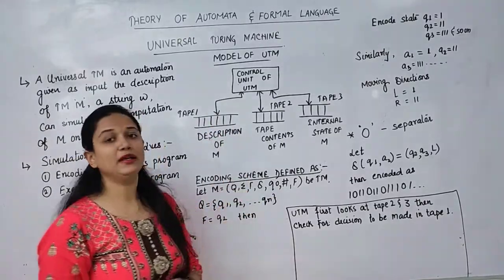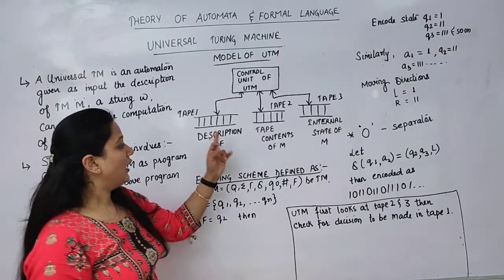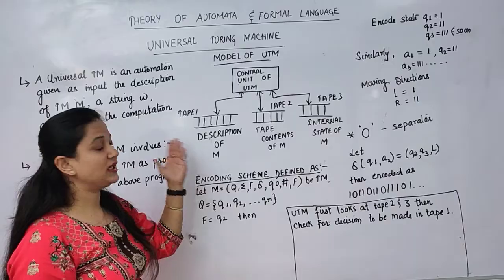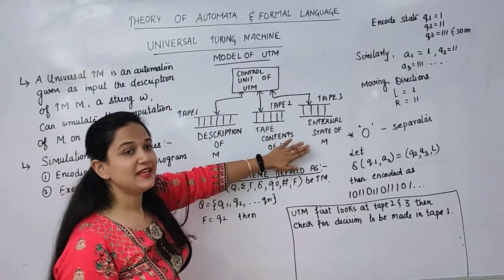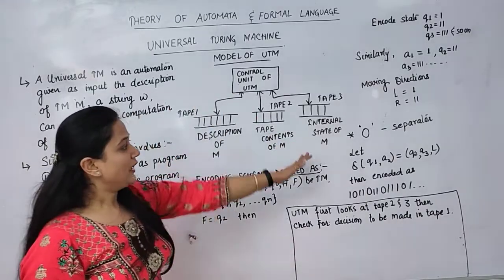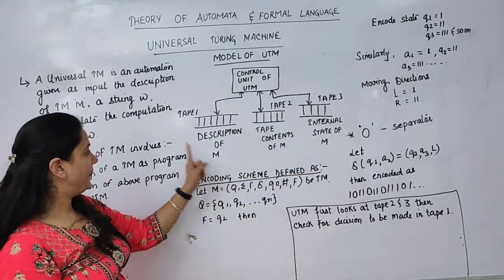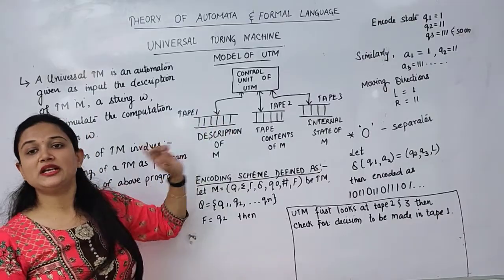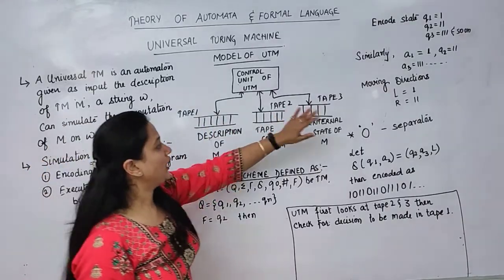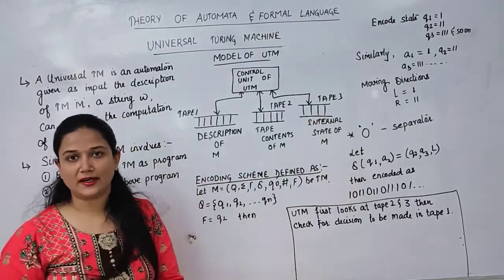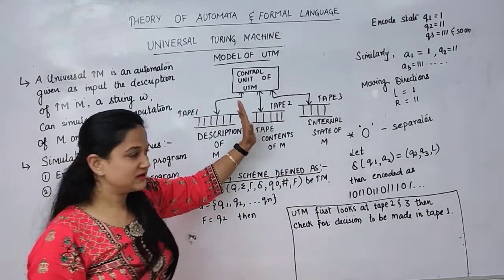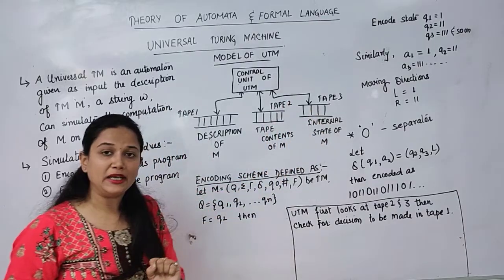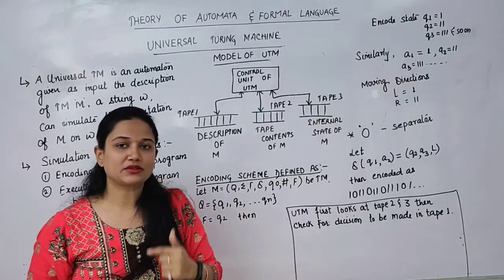The second tape contains the tape content of M — we give the input alphabet to Turing machine M on this tape. The third tape stores the internal state of M — what is the current state. Using both the current alphabet from tape 2 and the current state from tape 3, we are able to find out what will be the next transition.